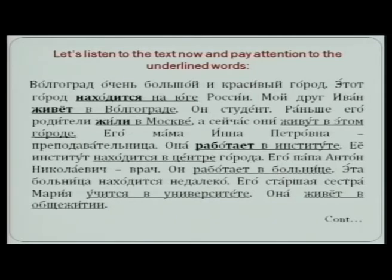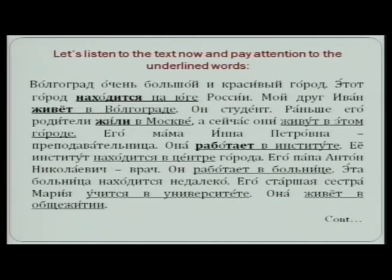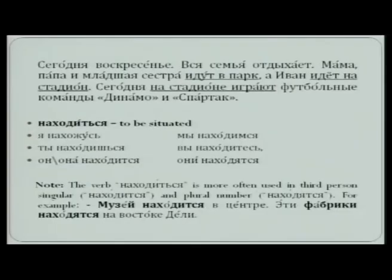The expressions which are underlined are used with prepositions — na, v, etc. — and they are translated according to context. Today is Sunday. The entire family is taking rest. Mother, father, and the younger sister are going to the park. Here, idut has been used as the verb of motion in the oni form, because mama, papa, and younger sister are taken together as oni — they go to the park.